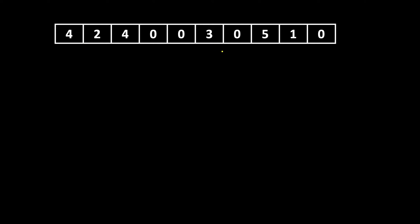So the output should be four, two, four, three, five, one, then all the remaining zeros — we have not changed the order. The other constraint is that you are not allowed to use extra space. You cannot count all the zeros or copy non-zero elements first and then append zeros at the end. You have to do this all in-place; you are not allowed to use space of the order of N.